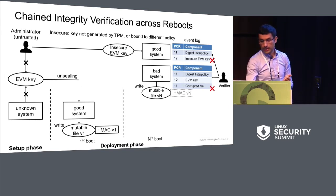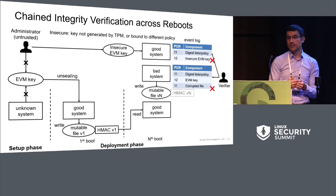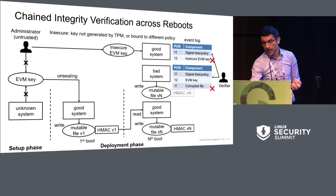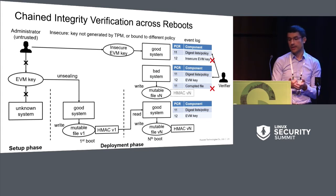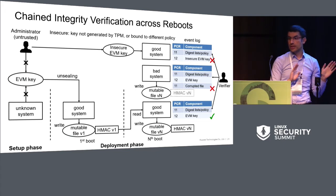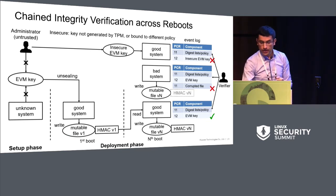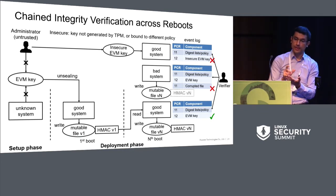If the system was in a good state during the first boot, it was able to calculate valid HMACs. When the system is rebooted, it can read mutable files with valid HMACs, and the measurement list is still good because it contains the whitelist and the good EVM key. Verification is successful only in this case. We have only static measurements — no measurement of mutable files. This is what we needed to do the implicit remote attestation, because the key can be sealed only to one state, and if the state in the TPM is different, the key cannot be used.